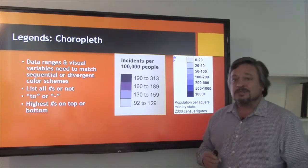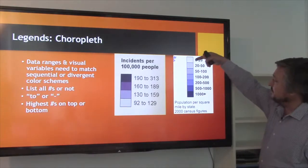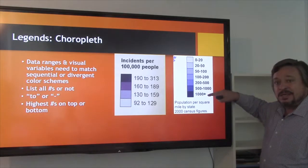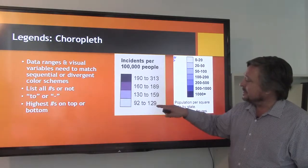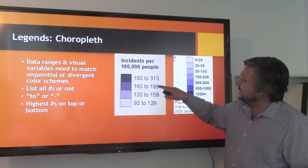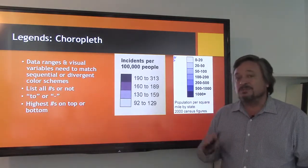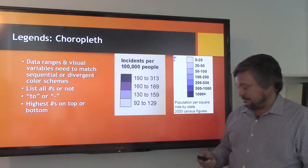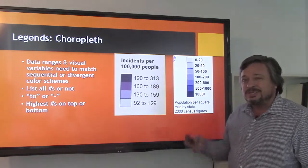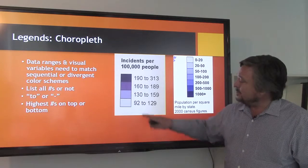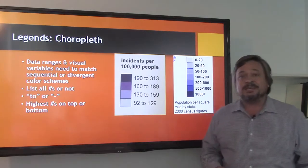A second issue you'll come across with choropleth maps is: do you show all the numbers or not? Notice in this one we have zero to a thousand in the numeric scheme, and all numbers are represented. In this one you can break it and not represent all numbers, but only represent the numbers that are present. This one also begins at 92 and ends at 313, which could seem odd, but those would be the lowest and highest values in the data — so it's only showing the data that's present.